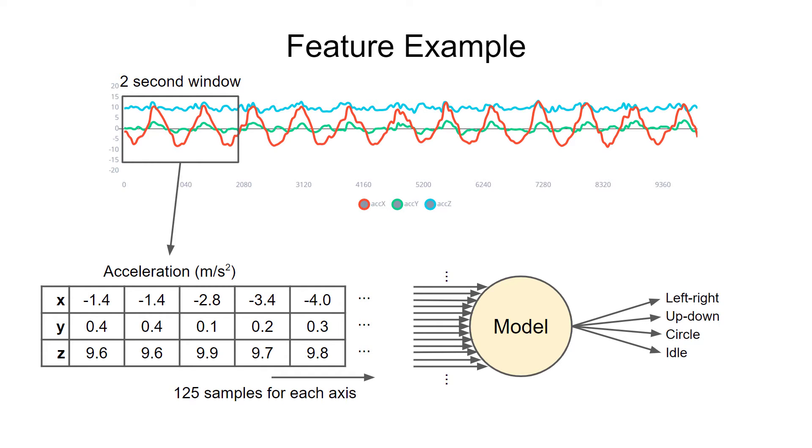So in total, that's 375 data points being fed into the machine learning model. Unfortunately, this means our input matrix to the model is now 375 dimensions, which is much harder for humans to visualize.